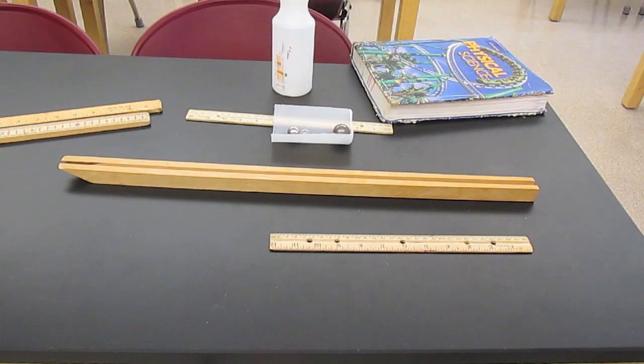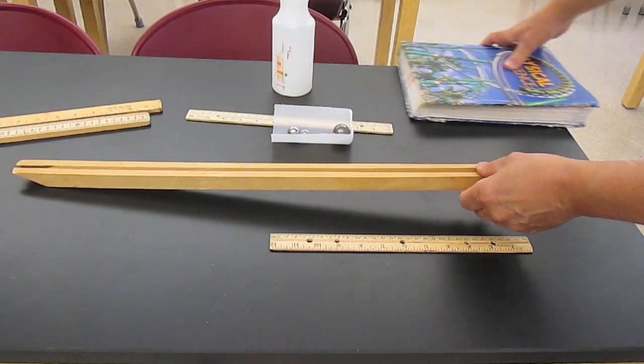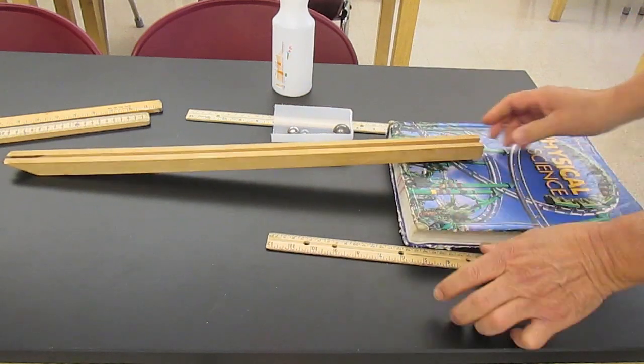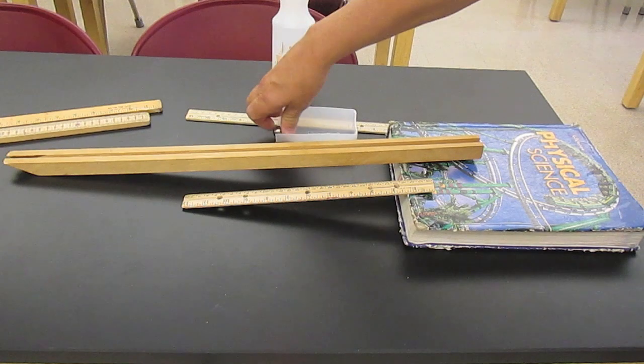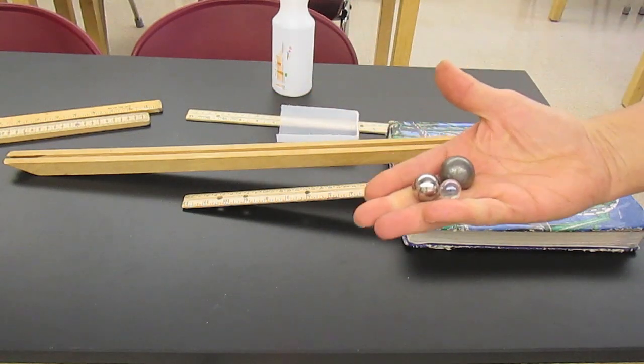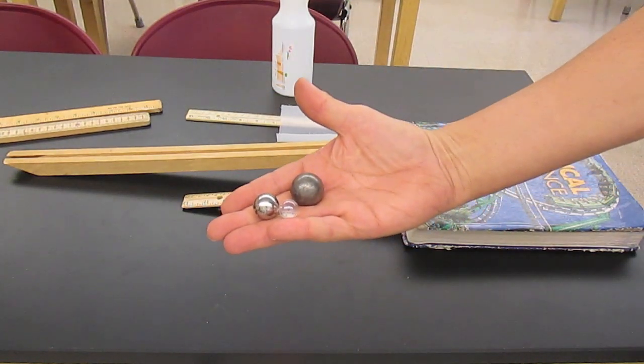The materials needed are rather simple. We have a long ramp that the ball is going to roll down, prop it up on a book, and if that's not available, you can simply use a ruler. Here we have the three balls that are going to roll down the ramp. They are different sizes. Two are metal and one is glass.